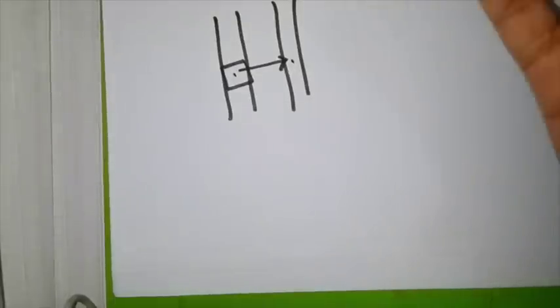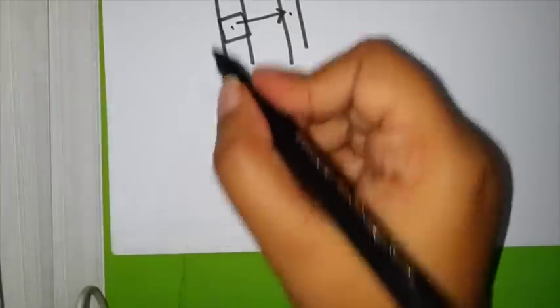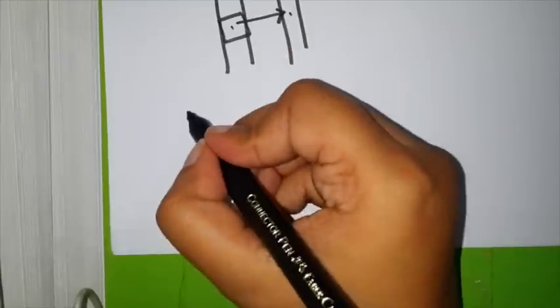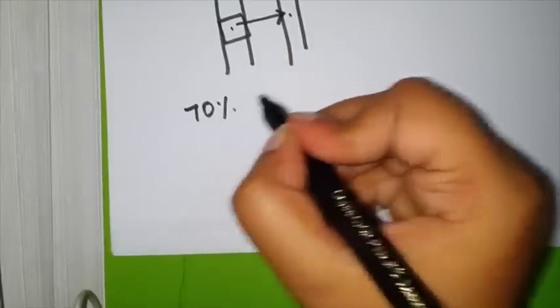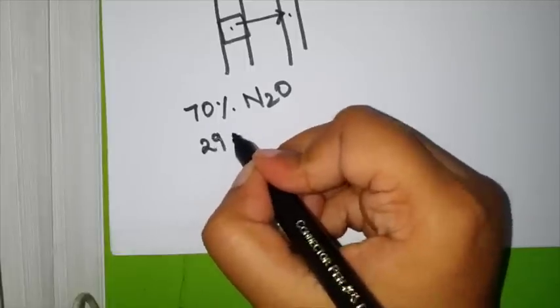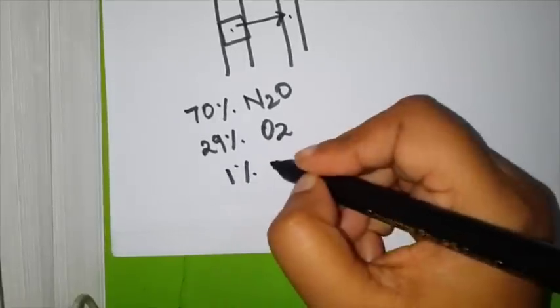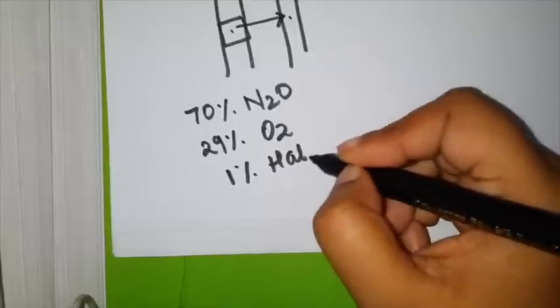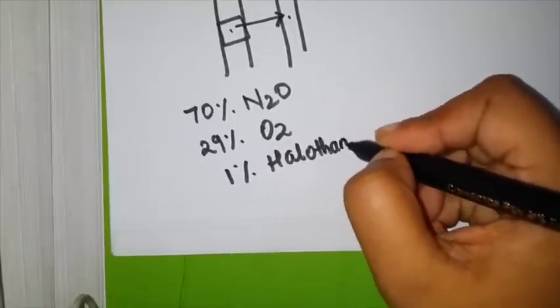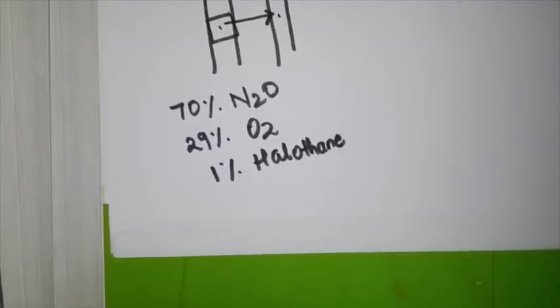Generally nitrous oxide is given in high concentration. For example, let's take the amount of gas present in the alveoli is 70% nitrous oxide, 29% oxygen, and 1% halothane. I'm writing halothane because I want to use the same example for second gas effect also.